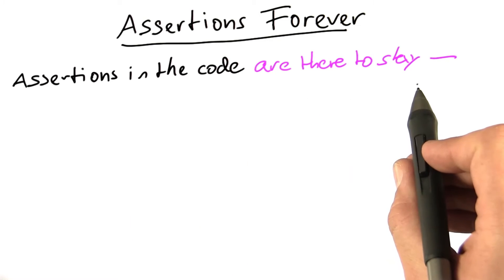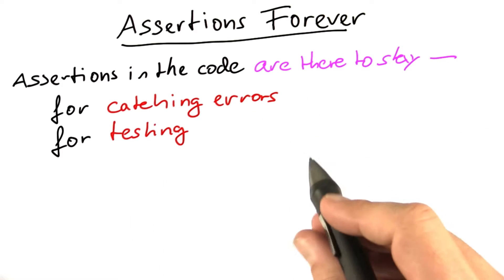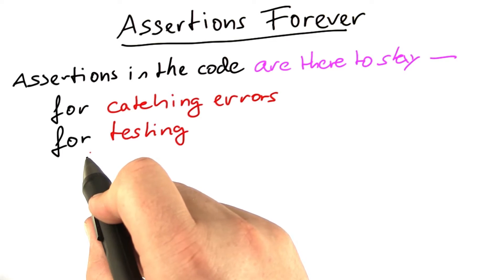Assertions in the code are there to stay. We use them for catching errors, which we can also use during testing.